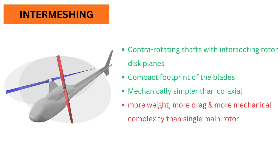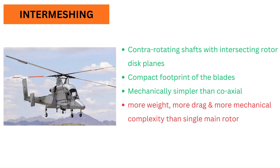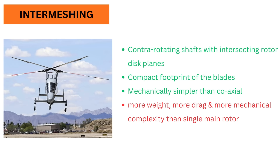To make the mechanism simpler, the intermeshing rotor configuration was developed. The intermeshing design features outward-tilted, contrarotating shafts with intersecting rotor disk planes, as seen on the Kaman K-Max. The two rotors are driven by a single gearbox that ensures the rotors do not hit each other. Like the coaxial, the intermeshing design offers a smaller overall footprint, which is beneficial for flight operations from confined locations.